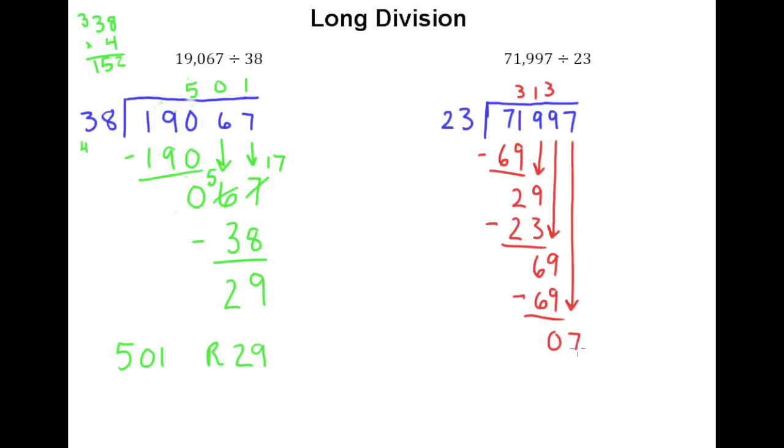Now 23 does not go into 7. You might be looking at this and saying okay, my remainder is 7. And that's true, but we cannot forget that once we drop down the digit, if 23 doesn't go into 7, we had better say so. We had better put a 0 above the last digit there. So our answer is 3,130 with a remainder of 7.